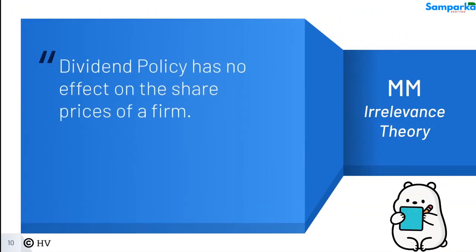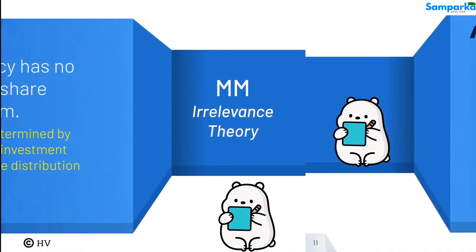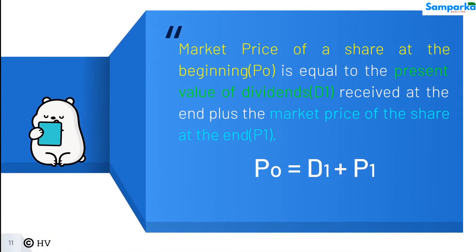Dividend policy has no effect on the share prices of a firm. The price of a share is determined by earning capacity and investment policy, not by income distribution pattern. The market price of a share at the beginning, P0, is equal to the present value of dividends D1 received at the end, plus the market price of the share at the end P1. So P0 = D1 + P1.